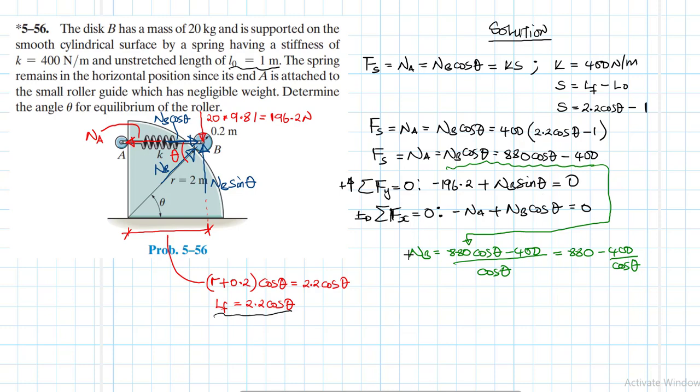Now with this information we are going to make NB subject to the formula. If we did so, we'll have NB equal to 880 cos theta minus 400 divided by cos theta, which simplifies to 880 minus 400 divided by cos theta.